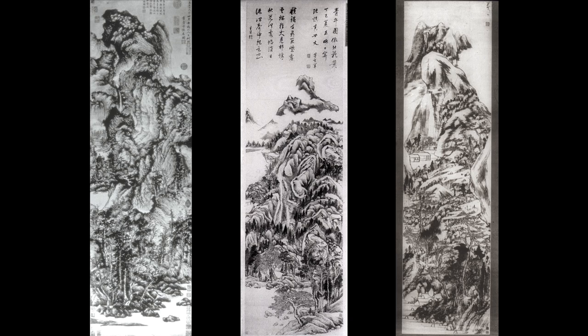The three paintings are: Wang Meng's Qingbian Mountains of 1366, Dong Qichang's Mount Qingbian painting done in 1617, and a landscape by Zhu Da or Bada Shanren, undated but painted around the very end of the 17th century. Dong Qichang's painting, although it bears more or less the same title as Wang Meng's, was not based on Wang's painting, but on a painting of the same subject by Zhao Mengfu, now lost. So Wang Meng, who must have known Zhao Mengfu's painting, probably used that too as one of his models.